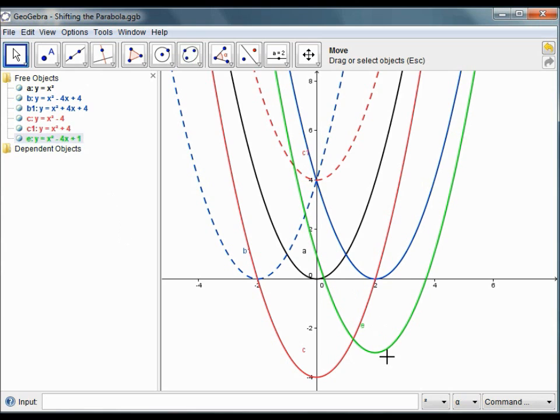Alright, so in expanded form, that's how it's going to look like. So let me just write it once again: y equals (x minus 2) to the power of 2, minus 3. So this is the equation.